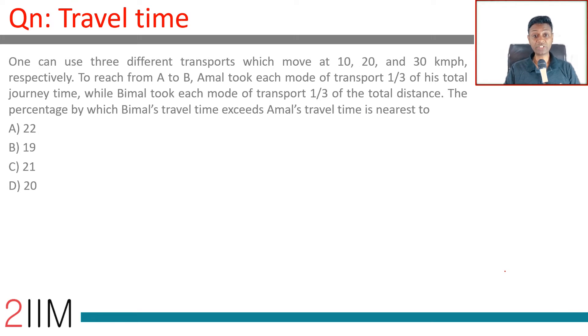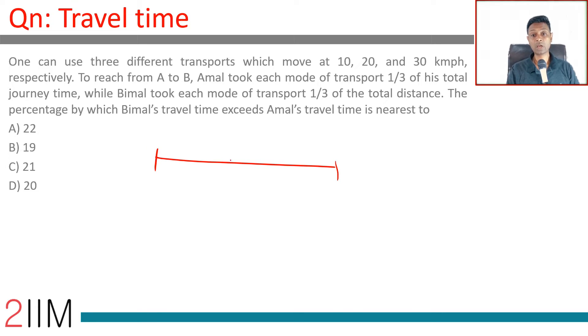One can use three different transports which move at 10, 20, and 30 kilometers per hour respectively to reach from A to B. Amal took each mode of transport for one third of his total journey time.